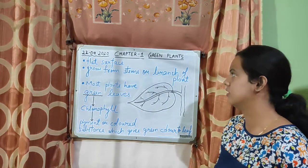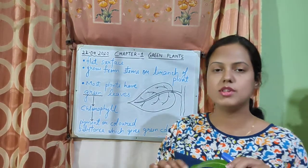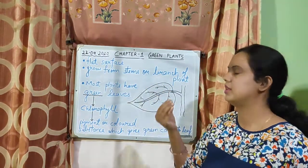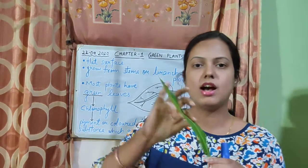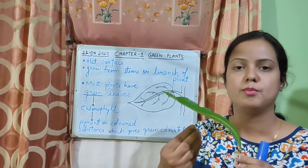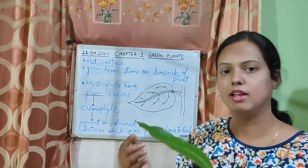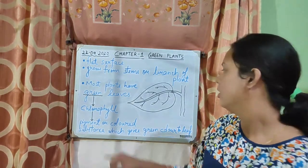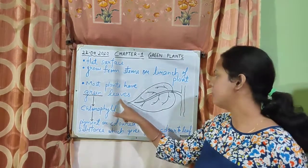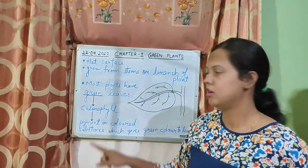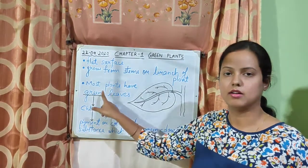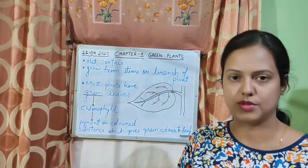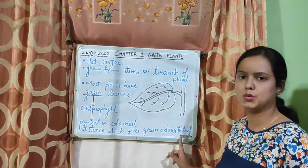Let's revise. The leaf surface is flat. Leaves grow from the stem or branch of the plant. Most of the plants have green leaves. Why are the leaves green? Because in the leaves chlorophyll is present — chlorophyll gives the leaves their green color. Chlorophyll is a pigment, or a colored substance, which gives green color to the leaves.